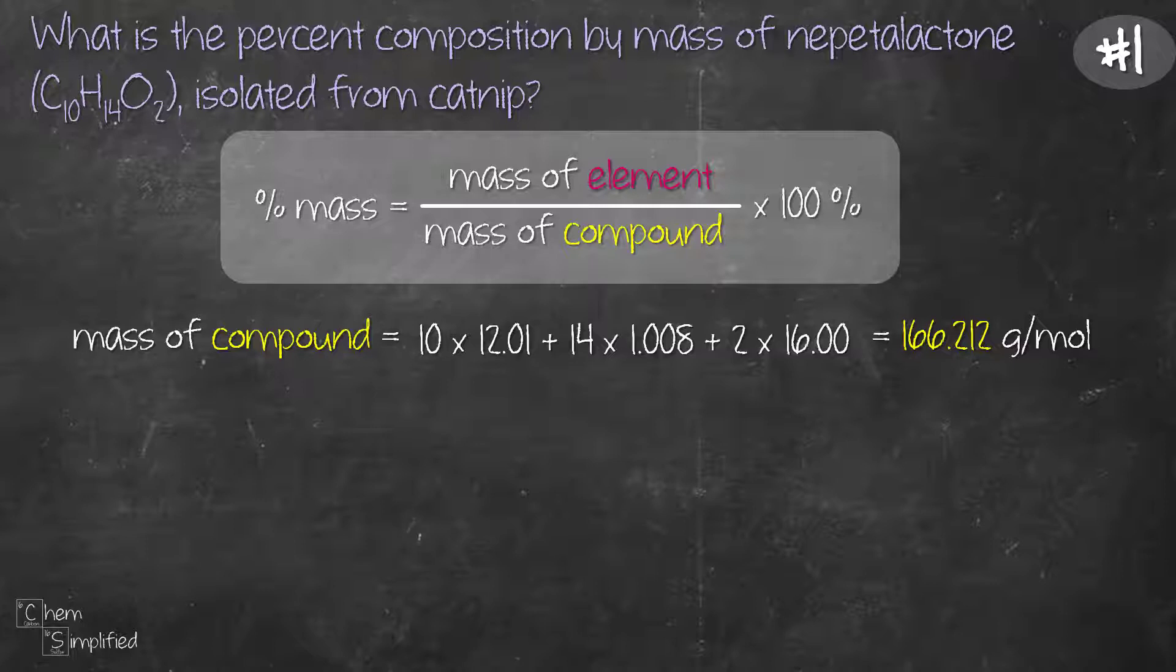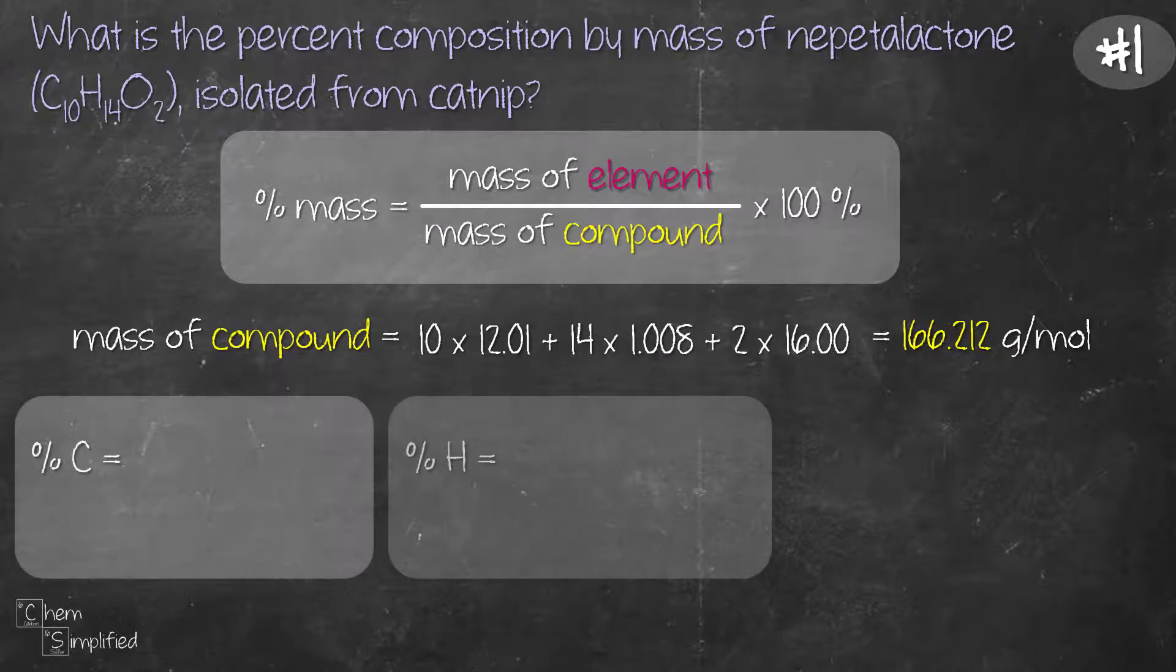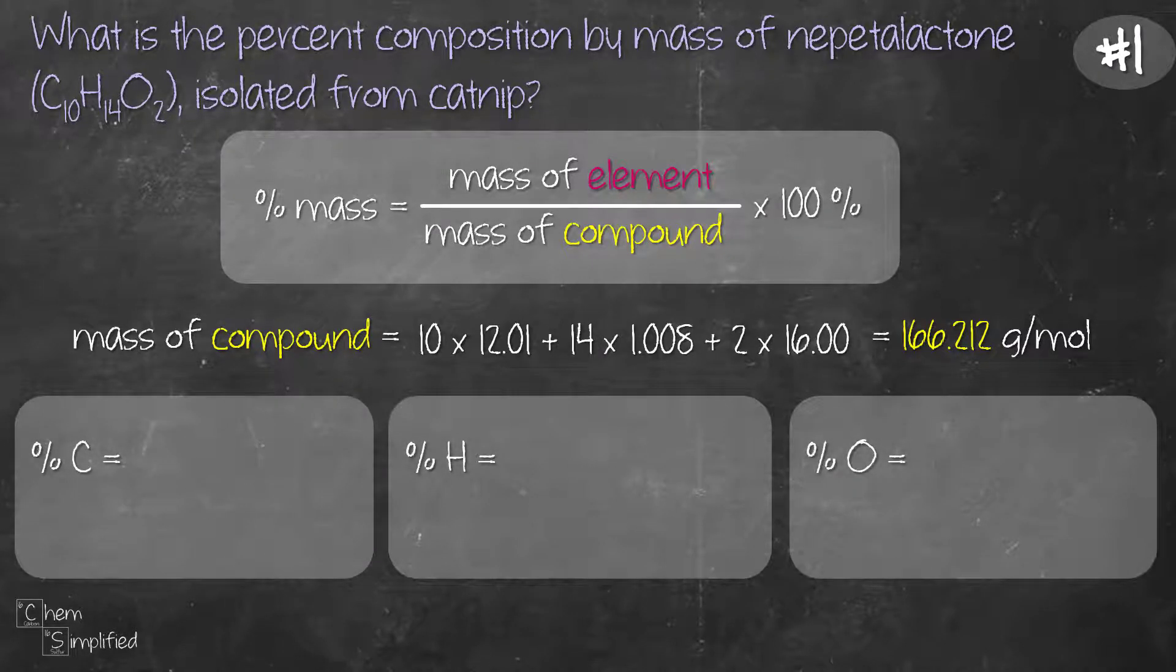Since there are three types of atom in the compound, we'll need to find the percent carbon, percent hydrogen and percent oxygen.